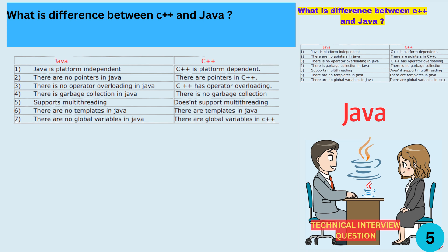Java has garbage collection, but C does not. Java supports multi-threading, while C does not. Java has no templates, but C does. Java has no global variables, but C does.